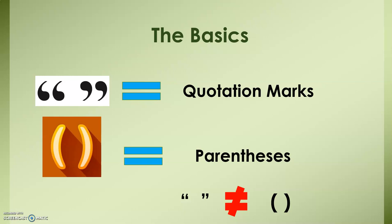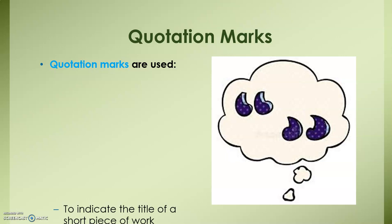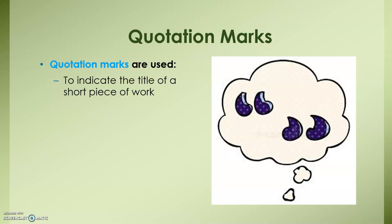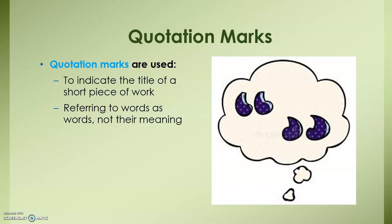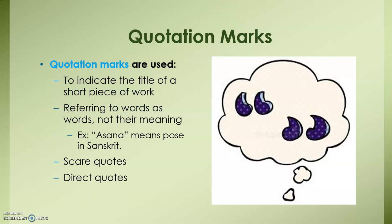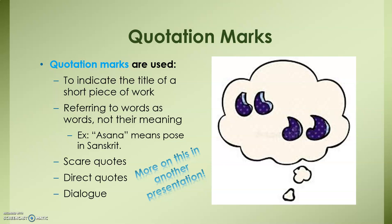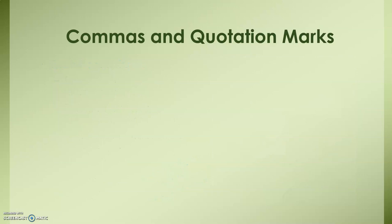Some of the ways that quotation marks are used are to indicate the title of a short piece of work — so this could be a short story, an episode of a television show, a song title, or a poem. Italics or underline are used for longer pieces of work. Quotation marks are also used to refer to words as words; for instance, 'asana' in quotation marks means pose in Sanskrit. They are also used for scare quotes, direct quotes, and in dialogue. For now, we are going to focus on how commas are used when you have quotation marks in a sentence.